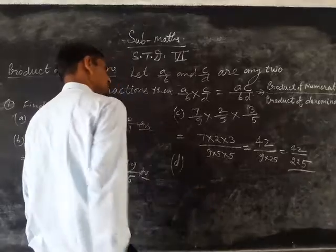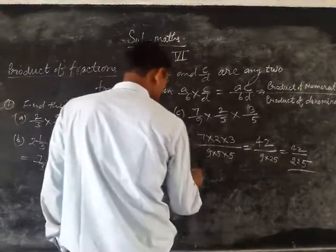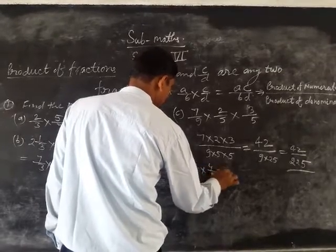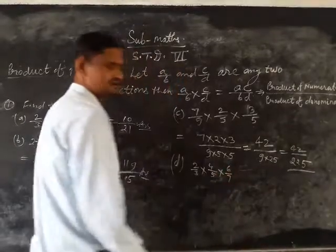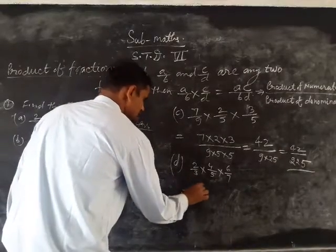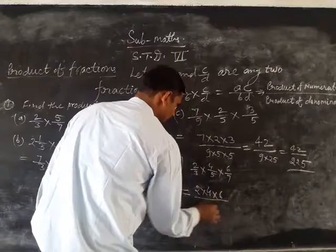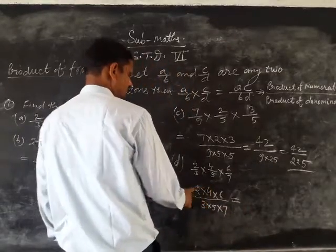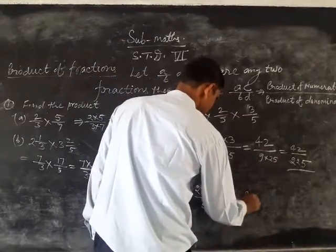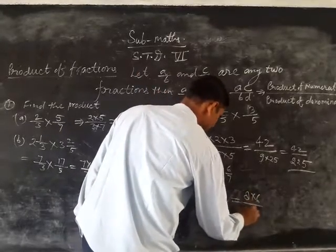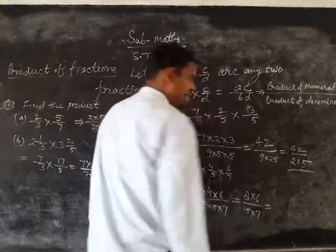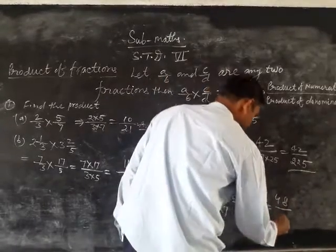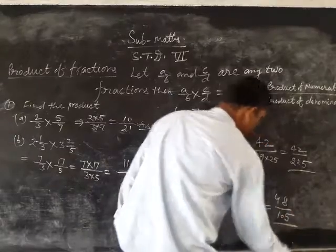D part: 2 upon 3 into 4 upon 5 into 6 upon 7, product of numerators 2 into 4 into 6 upon 3 into 5 into 7. You can do 2 times 4 is 8 into 6 upon 3 times 5 is 15 into 7. 8 times 6 is 48 upon 15 times 7 is 105. This is your answer.